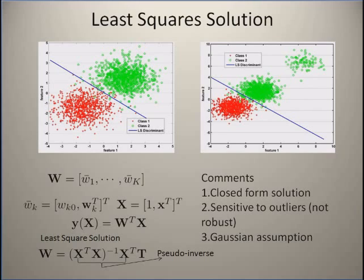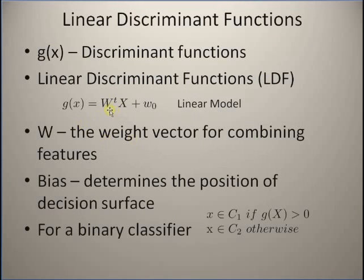Since we are trying to find the weight vectors for k classes, we have k linear discriminants for the k-class problem, giving us k weight vectors w. We group or stack all these w vectors into one big matrix W and try to find the matrix that minimizes the least squares error — that is, the error between the target vector and the linearly transformed samples, minimizing the difference between w-transpose x plus w-naught and the actual target values.